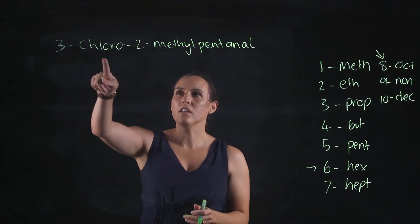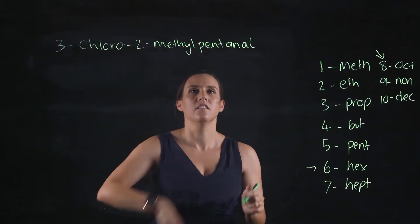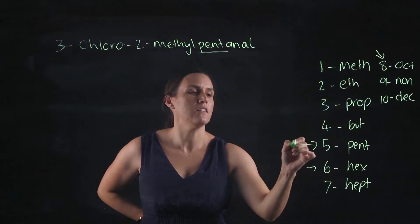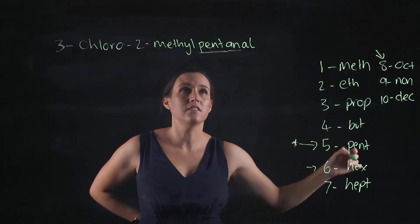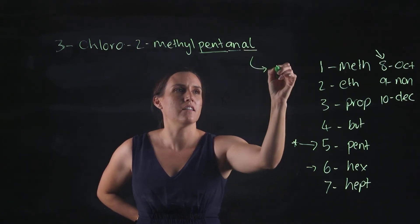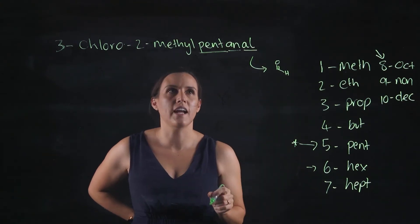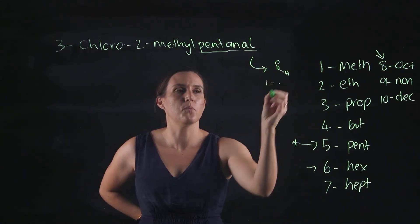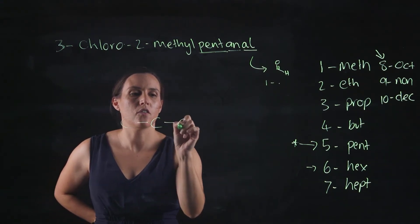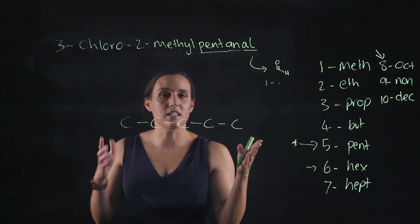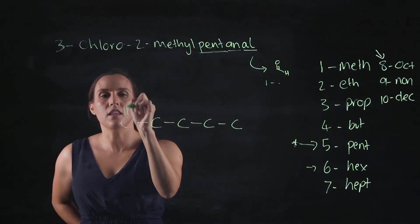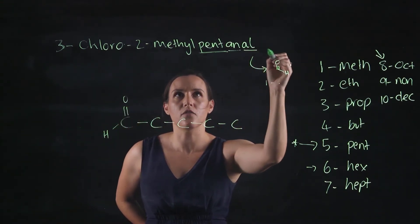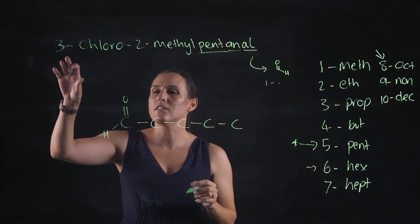Now let's try a functional group that's not a hydrocarbon: 3-chloro-2-methylpentanal. Unpacking the end: pent tells you it's a five-carbon chain; -al tells you there is an aldehyde on that chain. Aldehydes are the highest priority and will be on carbon one. Drawing it out: one, two, three, four, five — putting in the aldehyde functional group on carbon one with single bonds between all the other carbons.